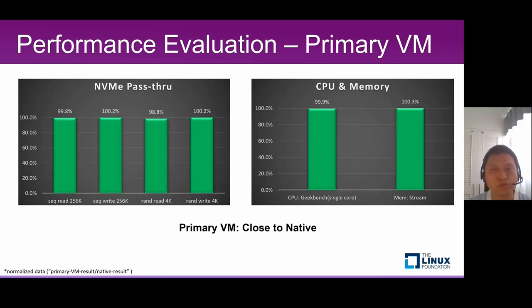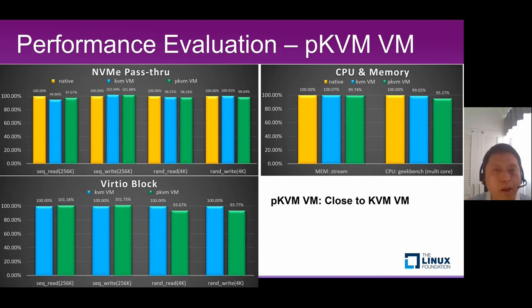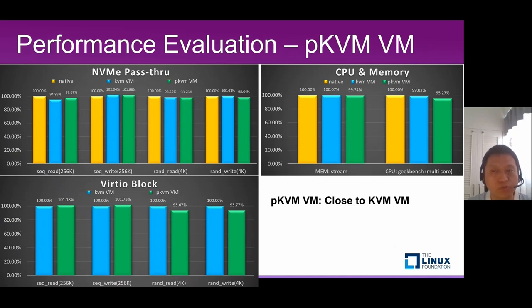This page and the next show a basic performance evaluation for the primary VM and normal VM on PKVM. The tests cover IO, CPU, and memory. Since we pass through almost everything to the primary VM including interrupts, VM exits from the primary VM are largely reduced, and the results are very close to native. Because the PKVM hypervisor is very thin, VM exits from normal VMs are simply forwarded to the primary VM with minimal overhead. We see that test results for pass-through IO, block IO, and CPU/memory are also very close to a VM running on top of native KVM.